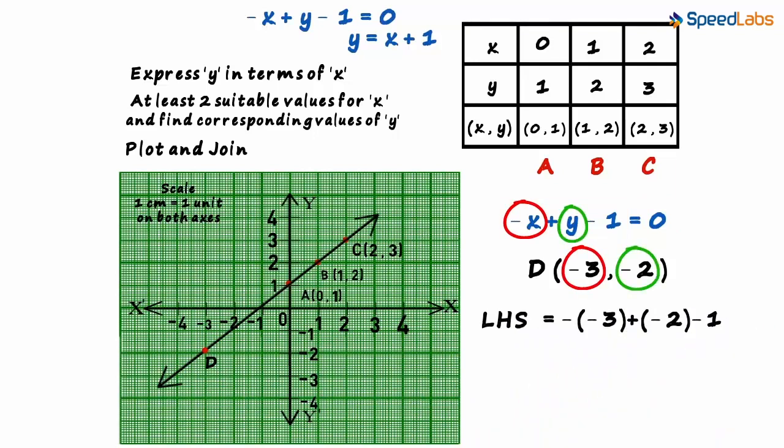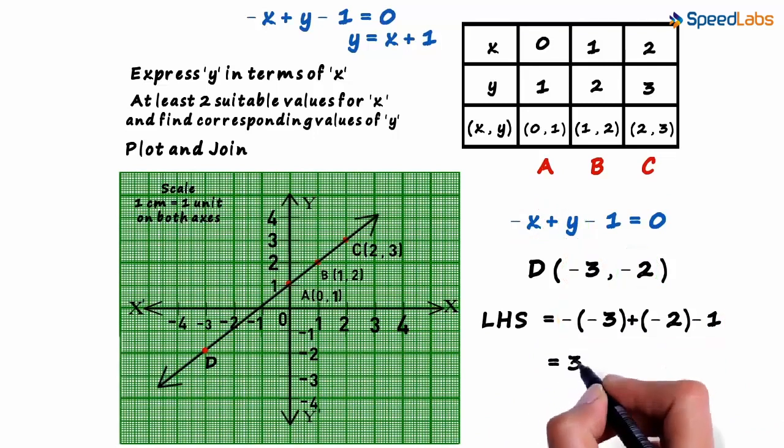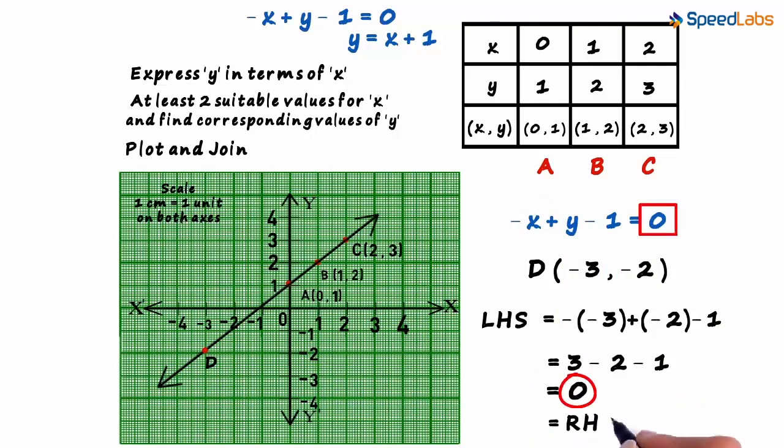It can be calculated as minus of minus three plus minus two minus one. That equals three minus two minus one which equals zero. Yes, that is equal to the right hand side.